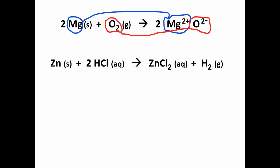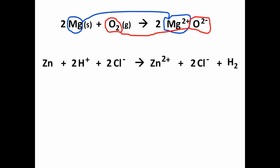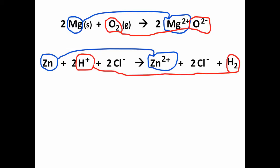Here's another example. Zinc metal reacts with hydrochloric acid to make zinc chloride and hydrogen gas. Again, if we explicitly show the charges of the substances involved, we can see that zinc loses electrons — it's oxidized — and the hydrogen ion gains electrons and it's reduced.